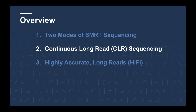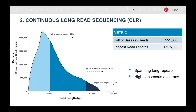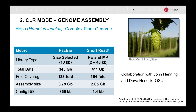Now let's see what you can do with the CLR data type. For long DNA fragments using the CLR approach, you can collect reads as long as 175 kilobases, with over half of the bases from a single SMRT cell run in reads greater than 50 KB. These reads are able to span large repeats across complex genomes and have high consensus accuracy when used for genome assembly.